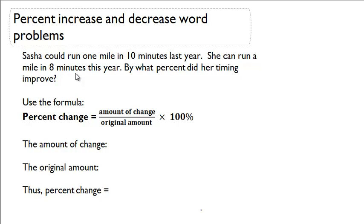So here we have a situation. Last year Sasha could run a mile in ten minutes. This year she got faster. Now she can run a mile in only eight minutes. Let's figure out how much she improved by in terms of percentage.